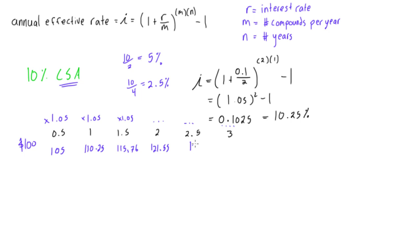Okay, 121.55, we'd get 127.63. And lastly, after 3 years, you'd get $134.01. That's just doing it without the formula, based on what I've told you here.